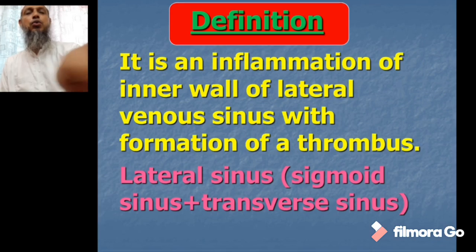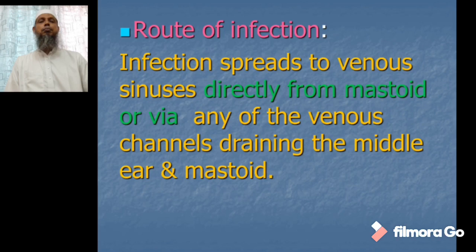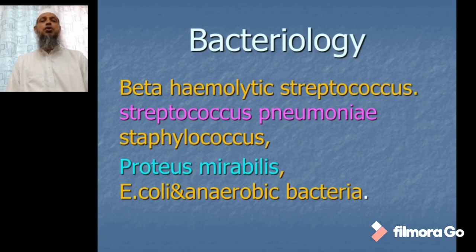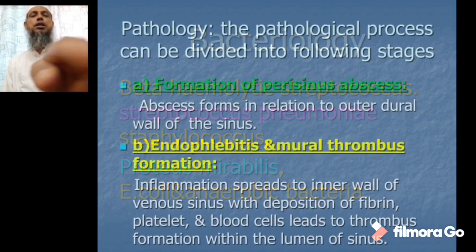The route of infection of the lateral sinus is that infection spreads to the venous sinus directly from the mastoid, or via any of the venous sinus channels draining the middle ear and mastoid. The organisms responsible for lateral sinus thrombosis are: first, beta-hemolytic Streptococcus, which is the most common; then Streptococcus pneumoniae, Staphylococcus, Proteus mirabilis, E. coli, and anaerobic bacteria.